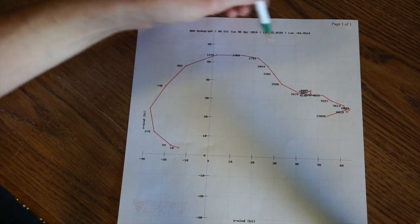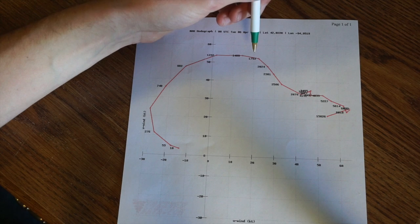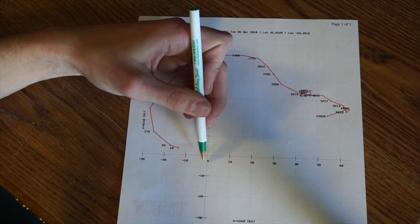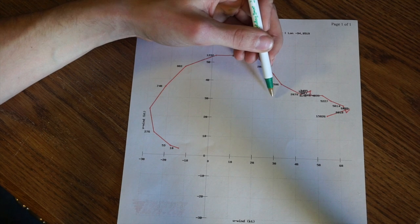But you generally want to use your upper level wind speeds and directions here. You can kind of predict this thunderstorm would be kind of heading northeast.